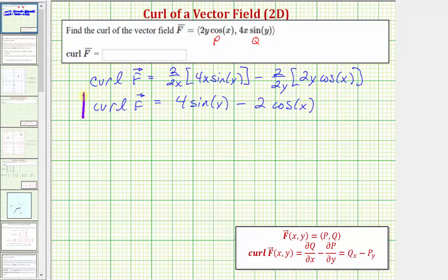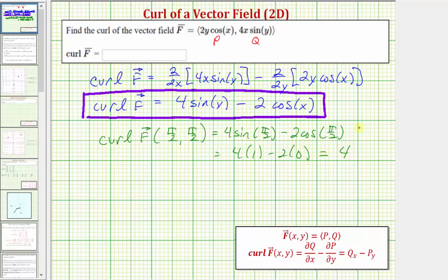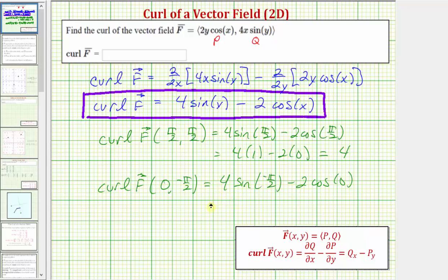Now let's evaluate this at two points. The curl of f at (π/2, π/2) equals four sine(π/2) minus two cosine(π/2), which is four times one minus two times zero, giving us four. Let's also find the curl at (0, −π/2), which equals four sine(−π/2) minus two cosine(0), giving us four times negative one minus two times one, which equals negative six.